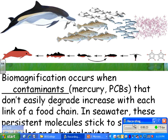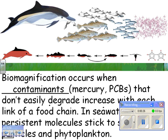In seawater, these persistent molecules stick to small particles and phytoplankton. For example, mercury sticks to phytoplankton, and then the zooplankton eat lots and lots of phytoplankton. The zooplankton take in nutrients and excrete waste, but they're not going to excrete the contaminants because those don't break down.